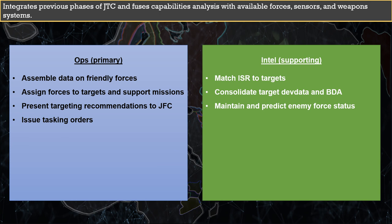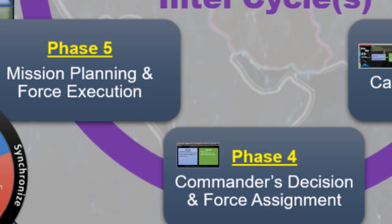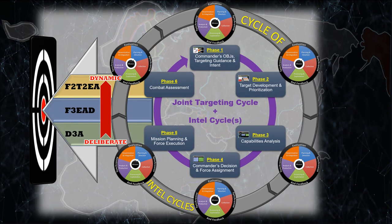Phase 4 continues the operations-focused trend, with operations getting the right people and equipment into place, while the role of intel is generally focused on getting the right ISR into place at the right time. Phase 5 and 6 require their own video because these are the phases of execution. The methods of execution range from the very deliberate method of Decide, Detect, Deliver, and Assess — known as D3A — to the very reactive and dynamic Find, Fix, Track, Target, Engage, Assess — the F2T2EA methodology.